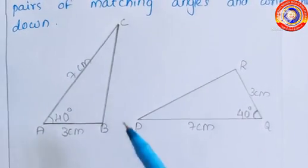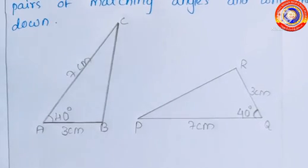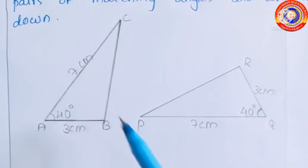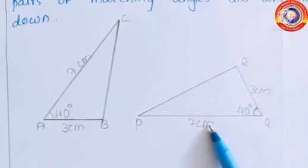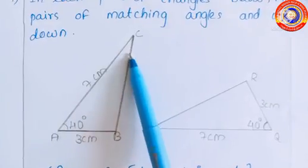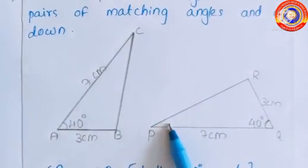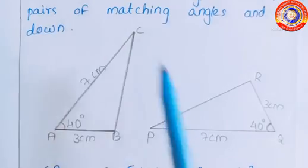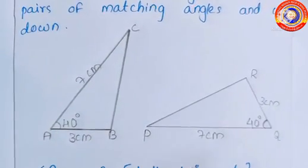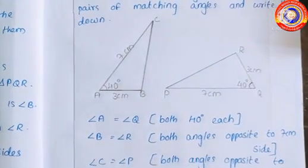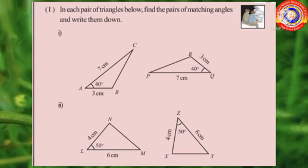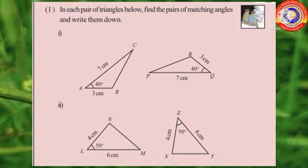Then angle B is equal to angle R — both are angles opposite to the 7 centimeter sides. The last one, angle C is equal to angle P — both are angles opposite to the 3 centimeter side. Children, like this, do the second part of this question as a homework activity.